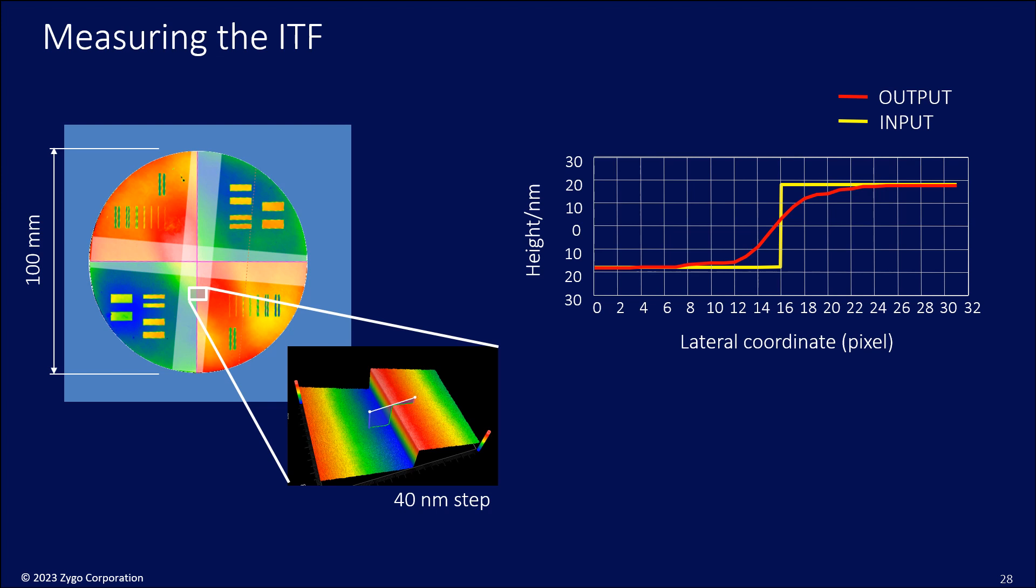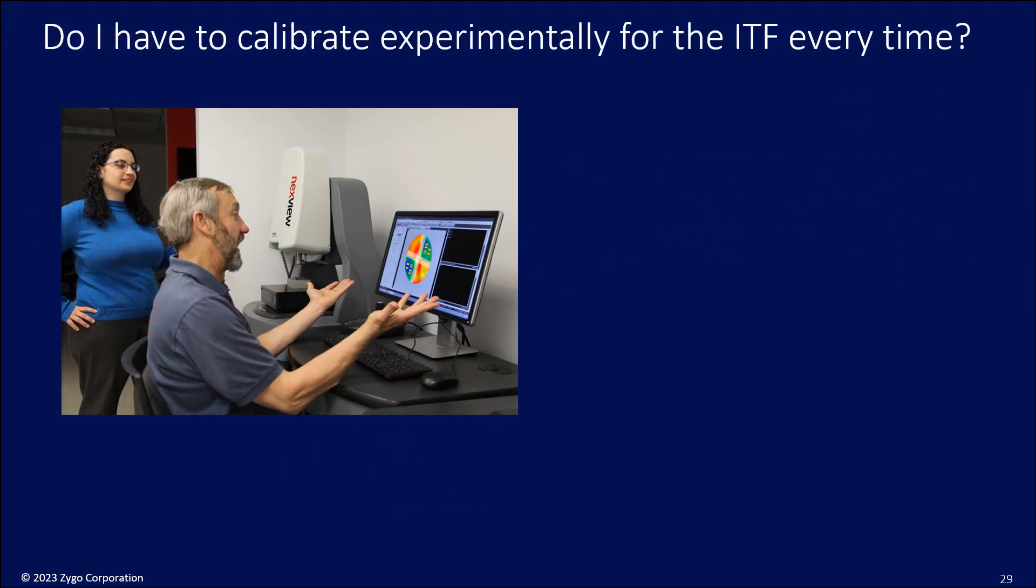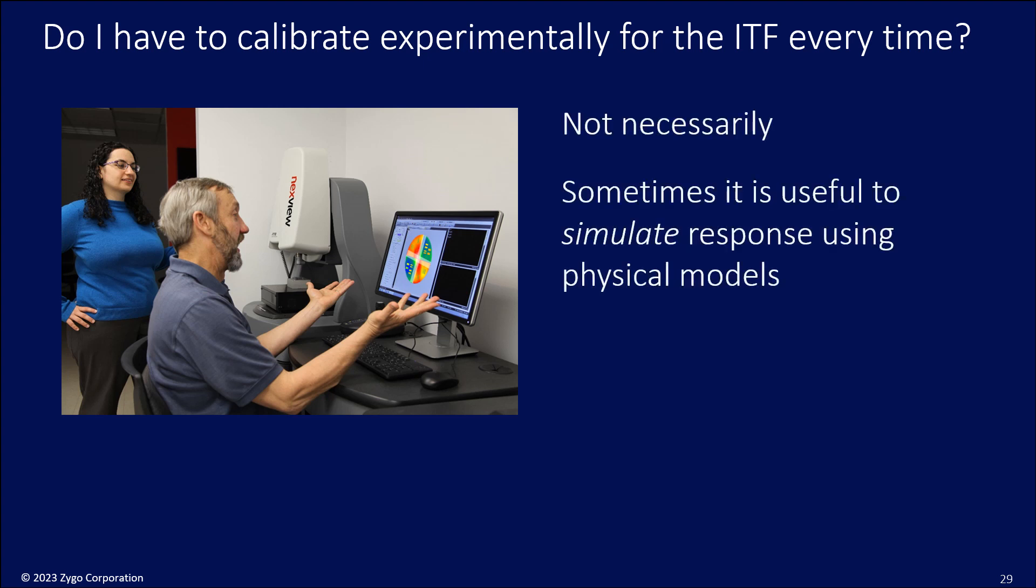To determine what the ITF is, we can measure it in a number of different ways. We can use different types of standards. There isn't actually a lot of agreement about how to do it. But we like to use the edge spread function where you compare the sharpness of an edge measured and theoretical to get the ITF. But do I have to do this every time I want to make a measurement? Do I have to calibrate experimentally for the ITF? And that doesn't seem like it's a very attractive solution. It's not necessarily the case. Sometimes it's useful to simulate the response using physical models, and this is a current area of research.